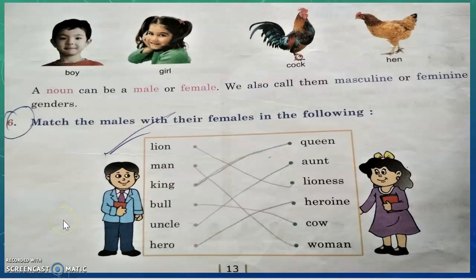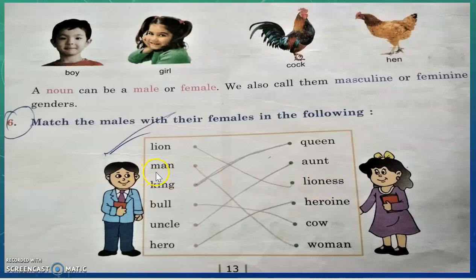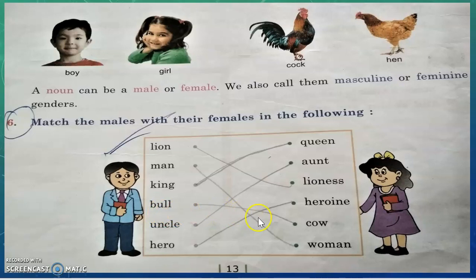Lion — lion is a male gender, so it's a masculine gender; its feminine gender will be lioness. Lioness is a female or feminine gender. Man — man is a masculine gender; its feminine gender will be woman. King — masculine gender. Queen — feminine gender. Bull — masculine gender. Cow — feminine gender.